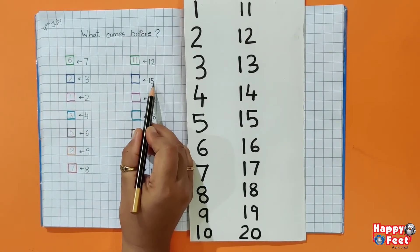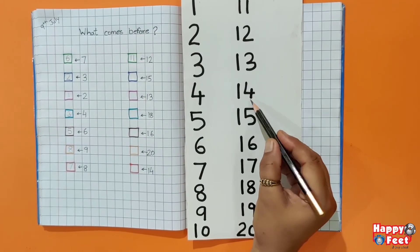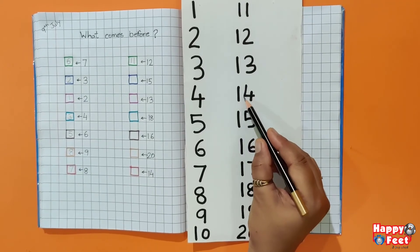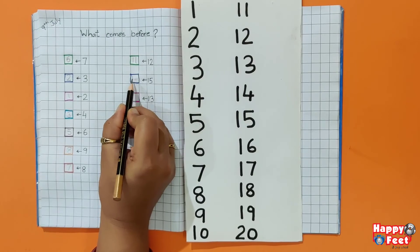1, 5. 15. Which number is before 15? 15 के पहले कौन सा नमबर है? 1, 4. 14. We will write here 14.